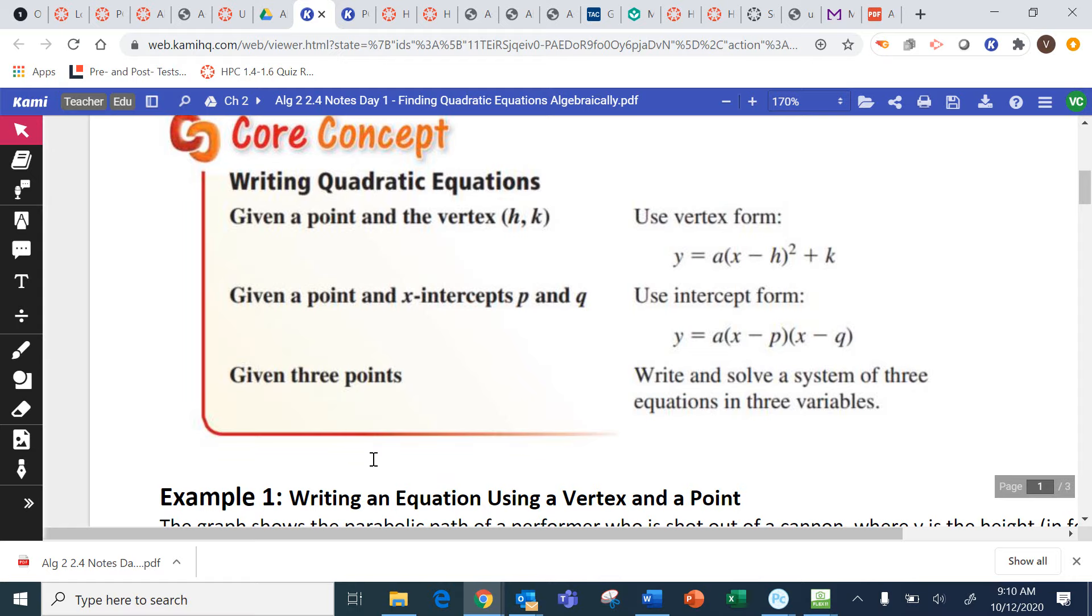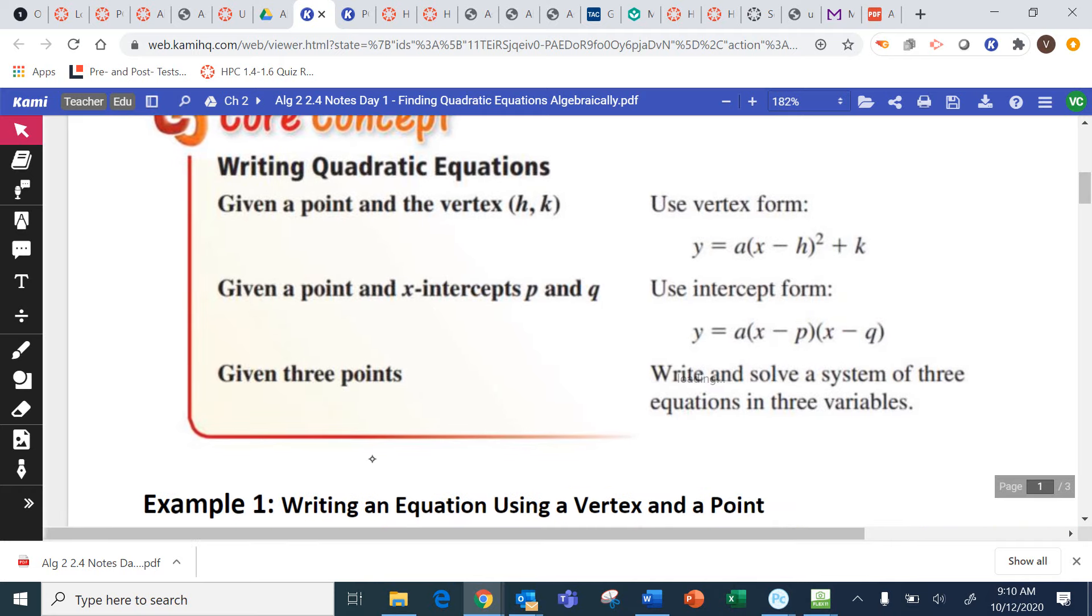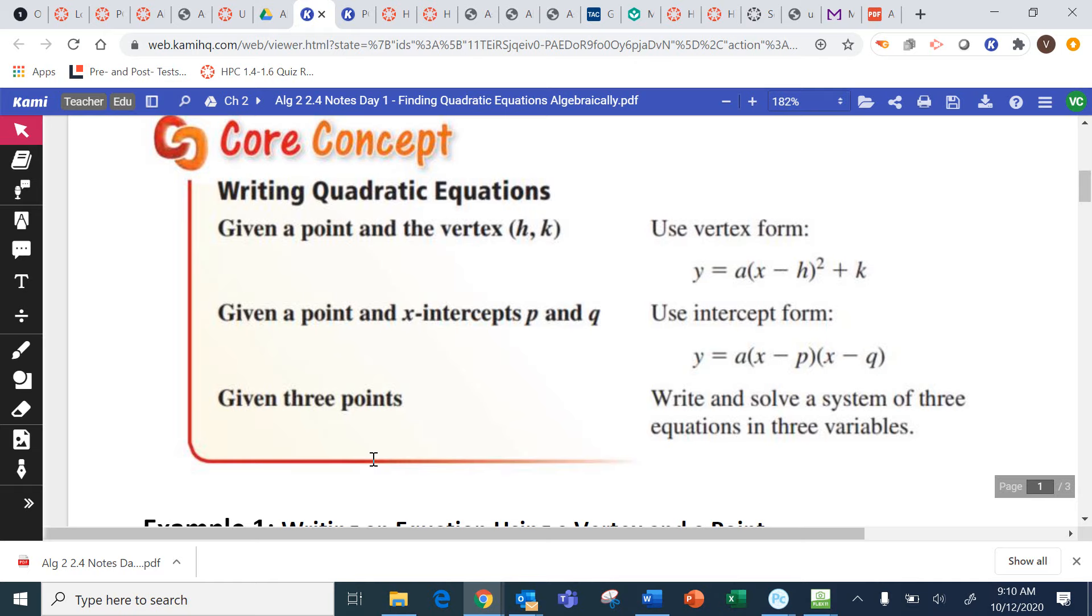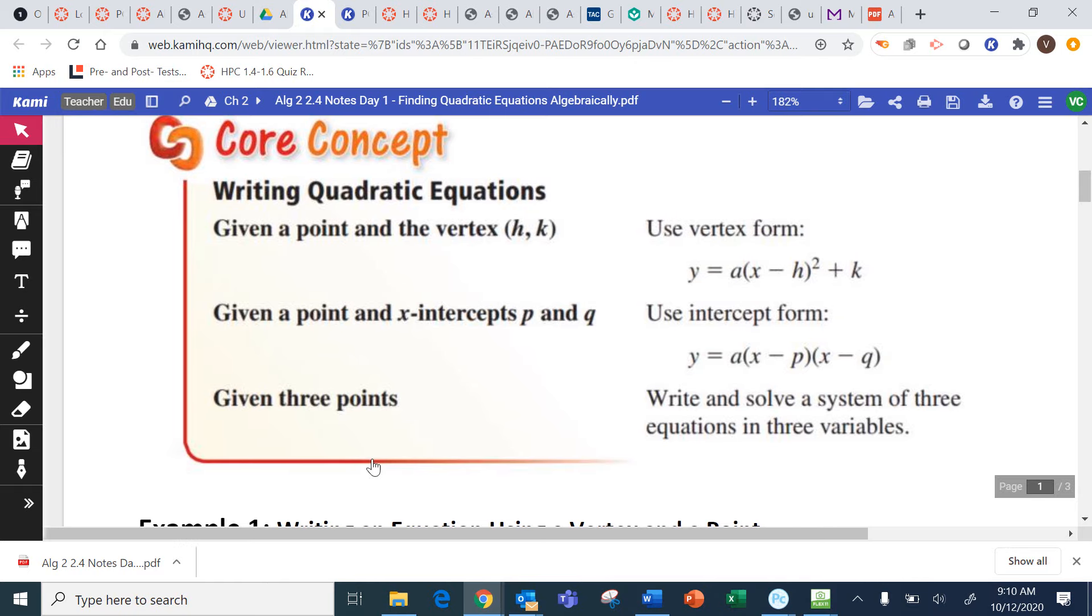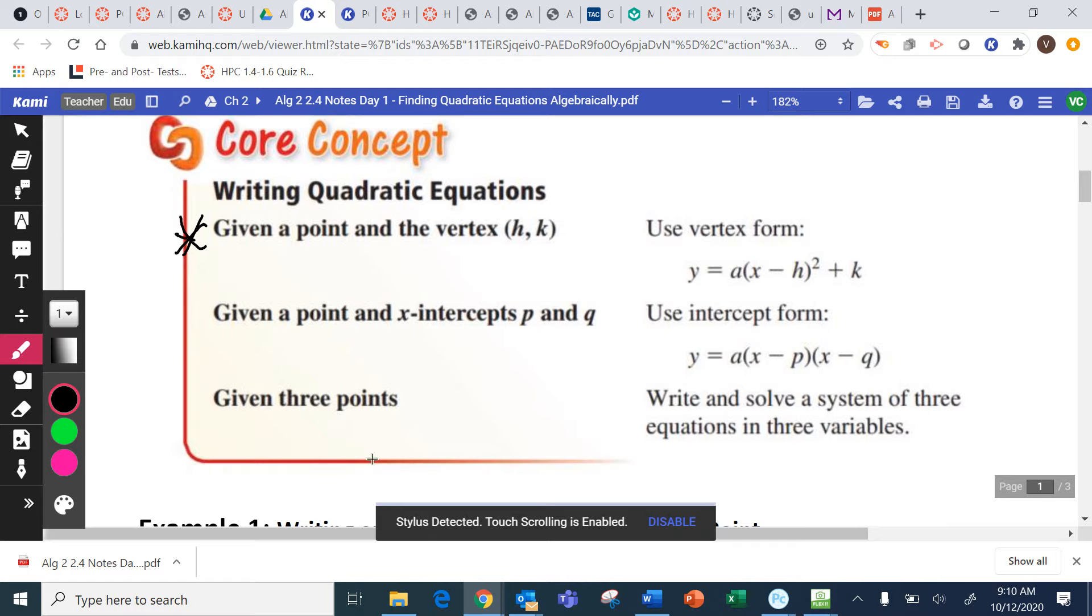So we're going to go backwards, and there are two things that we're going to cover today. We're going to cover given a point and the vertex, or given a point and x-intercepts. We're not going to do given three points. We're going to do the first two.